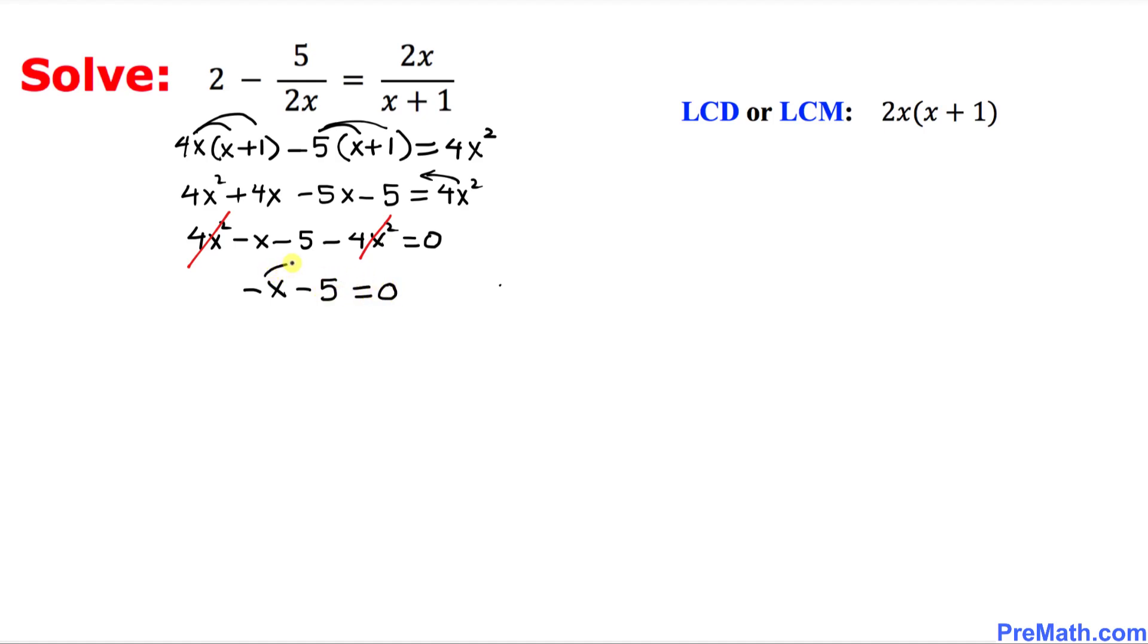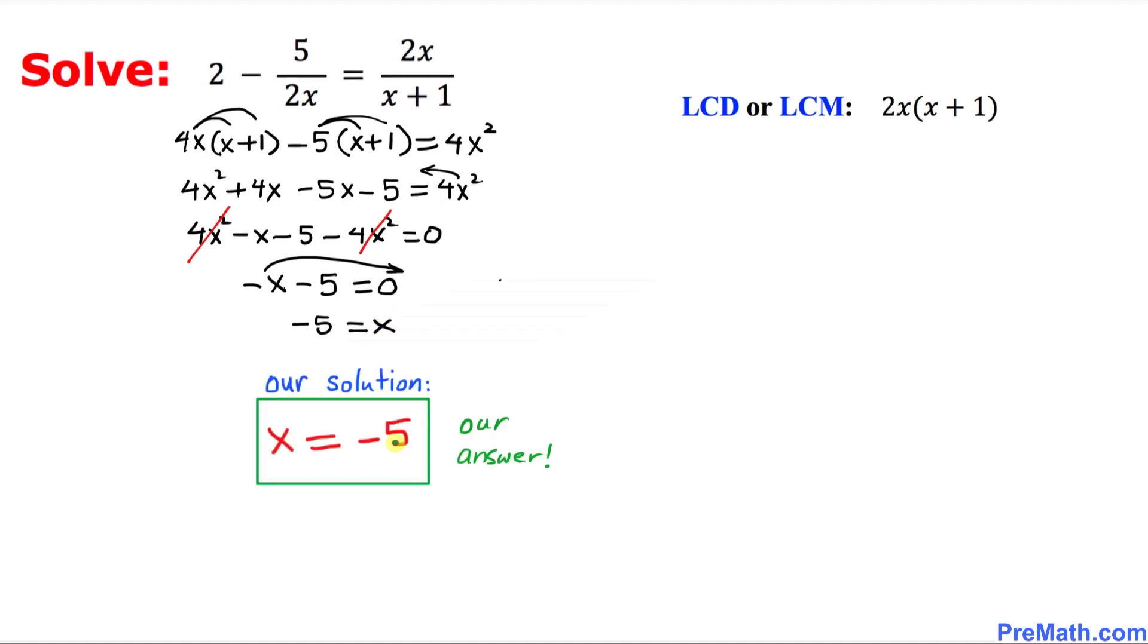Moving negative x to the other side, we get negative 5 equal to x. So our solution is x equals negative 5, and that is our answer.